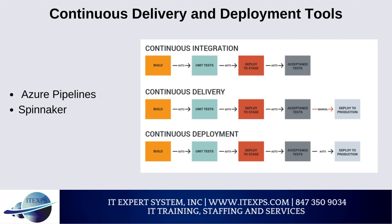Azure Pipelines is a cloud-based service that helps automatically build, test, and ship code to multiple targets through a combination of CI and CD mechanisms. It supports many languages, including Python, JavaScript, and Go; most application types including Node.js and C++; and targets such as virtual machines, containers, on-premises, and cloud platforms.